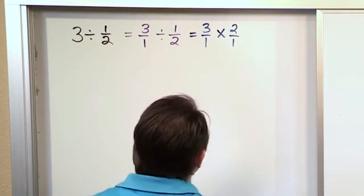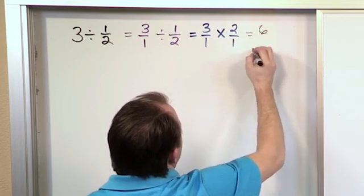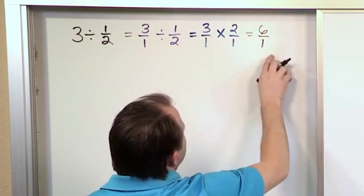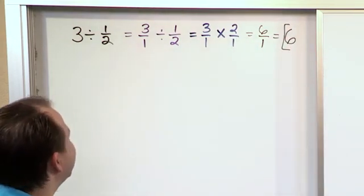Then it's extremely easy. On the top, you multiply. 3 times 2 is 6. We multiply the numerators. 1 times 1 is 1. Now we have 6 over 1, and you all know that when you have anything over 1, it just becomes the number. So the answer we get for this problem is 6.